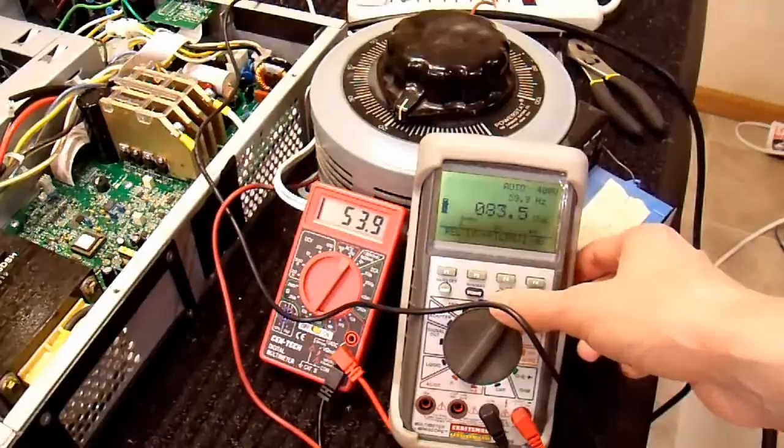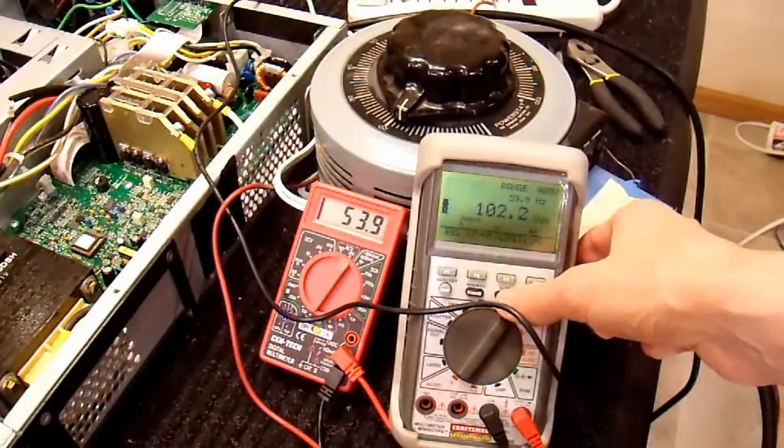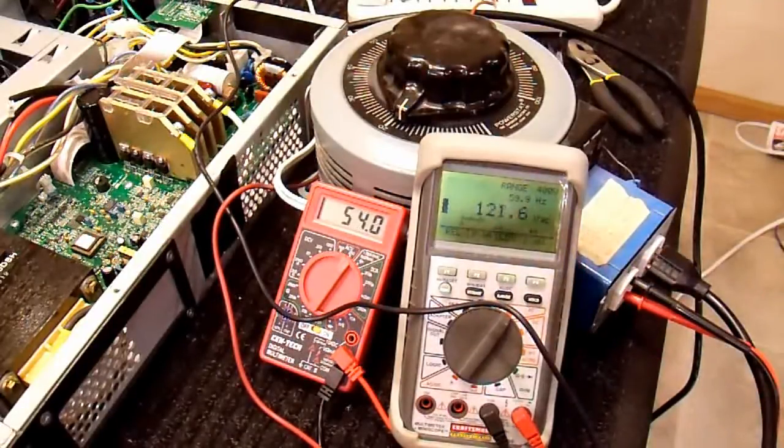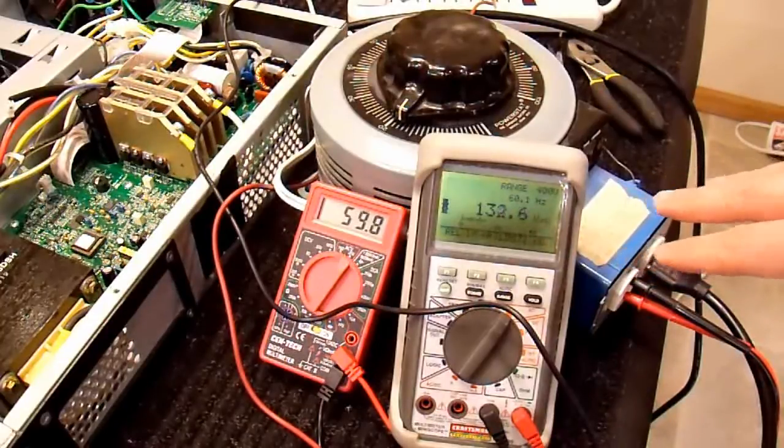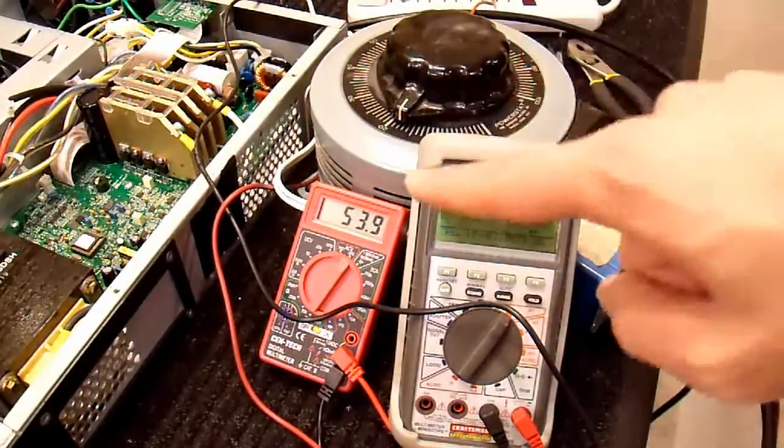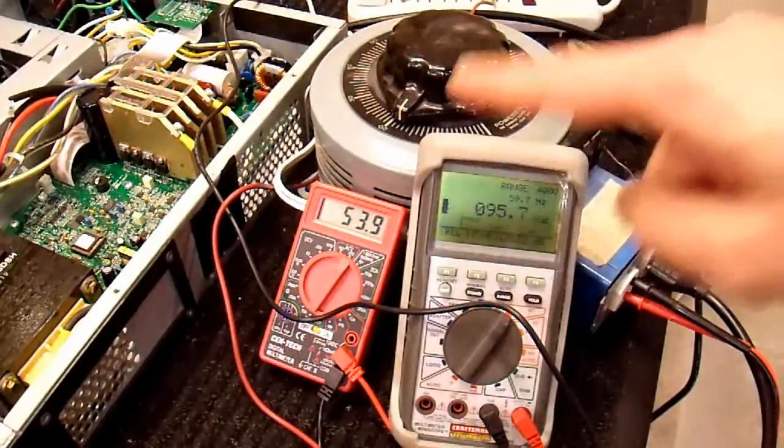So do a range hold on this. And this is going to oscillate up and down, up and down in voltage. That's because the two sine waves, the sine wave coming out of the wall and the sine wave coming out of this UPS, are not perfectly in phase.